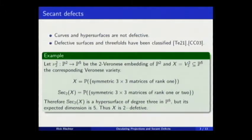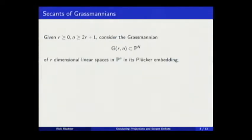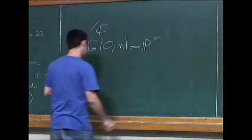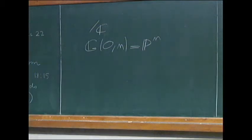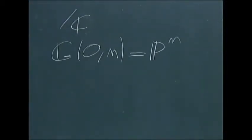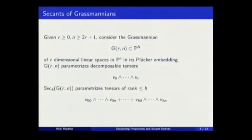The varieties which parameterize tensors are important in this. For instance, the Grassmannian. I always will consider the Grassmannian embedded by the Plücker embedding. So in my notation, G₀,n is a projective space. The Grassmannian parameterizes totally decomposable tensors and its secants parameterize the tensors which can be decomposed in up to h, sum of up to h tensors.